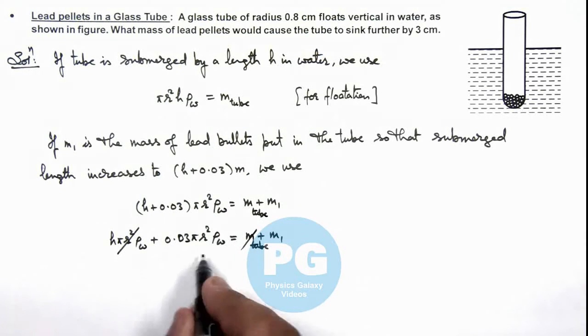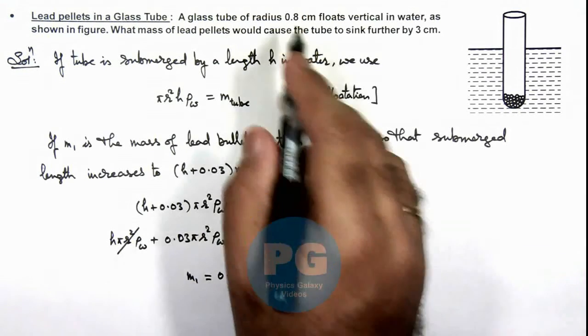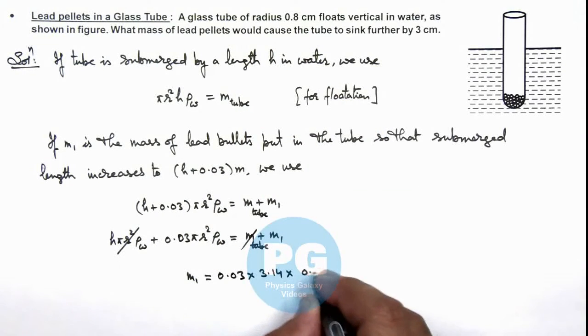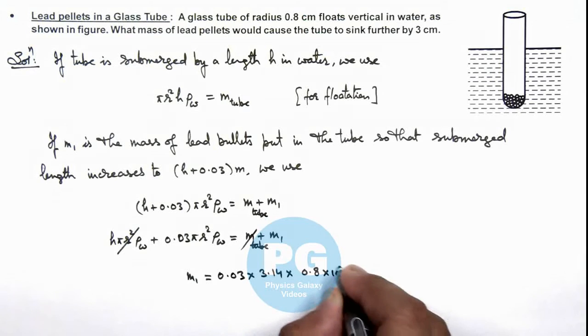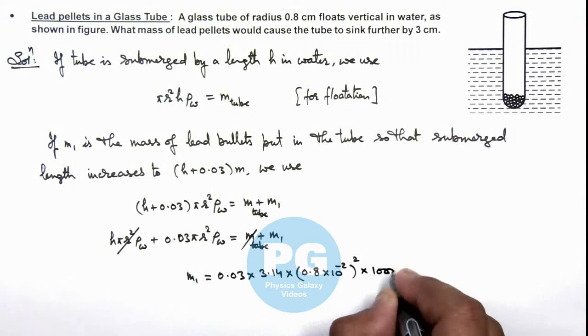So here the value of m₁ we are getting is 0.03 multiplied by π is 3.14 multiplied by radius of the tube is given as 0.8 centimeter, so this 0.8 × 10⁻² whole square, multiplied by density of water we can consider as thousand.